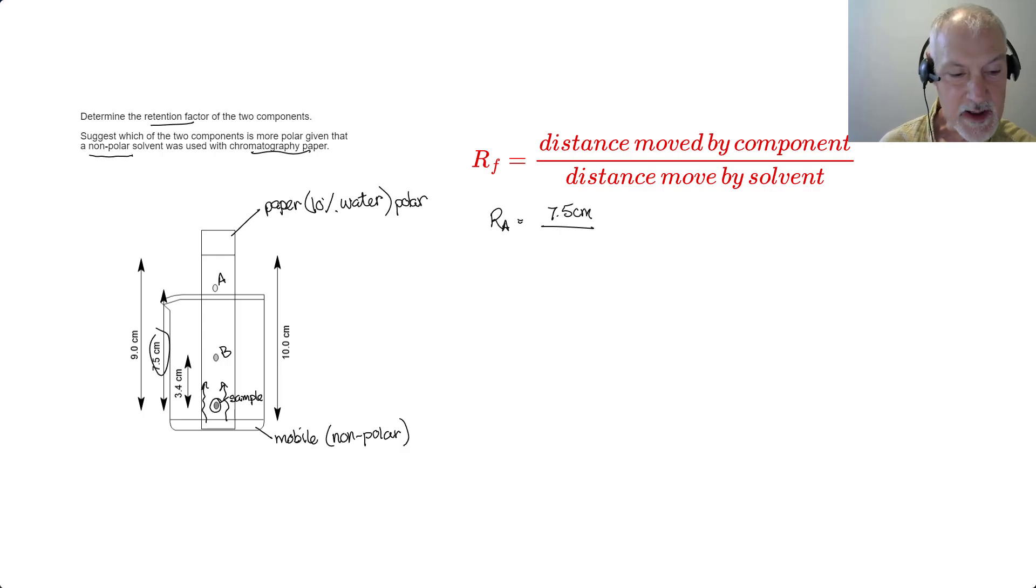What about the distance moved by the solvent? Now, I have two numbers here, I've got a 9 and a 10. It's important to remember when doing this calculation that everything is done with reference from the starting position of my sample, not the level of my liquid, but from the starting position of my sample. So I don't use the 10, I'll use the 9. And that gives me a retention factor of 0.83. There'll be no units because the centimeters will cancel.